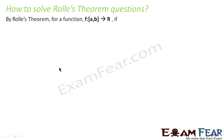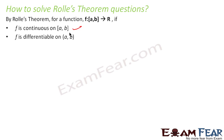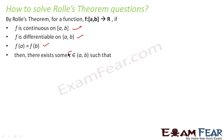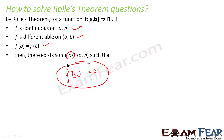Here is how to solve a Rolle's Theorem question. You will be given a function with domain [a, b] and range R. By Rolle's Theorem, if: (1) f is continuous on [a, b], (2) f is differentiable on (a, b) — open interval, not closed — and (3) f(a) equals f(b), then all three conditions are met and there exists a c such that f'(c) equals zero.